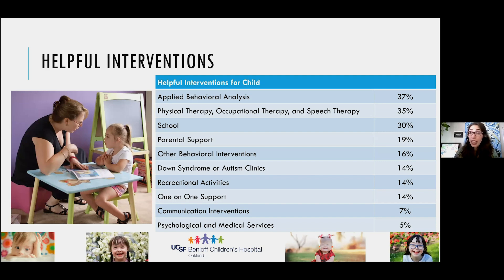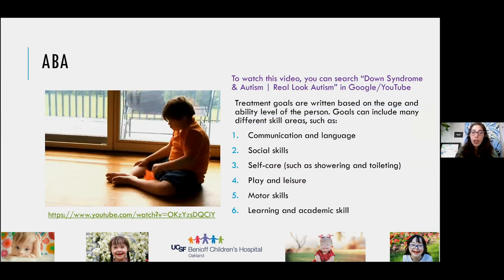Parents found that ABA was one of the most helpful interventions, followed by other therapies. School was listed as helpful, as well as parental support. Goals can be written to support any area of difficulty including communication and language, social skills, self-care and adaptive functioning, play, and learning and academic skills.